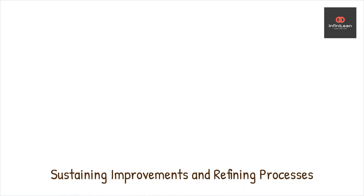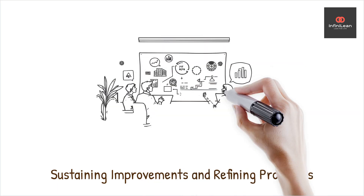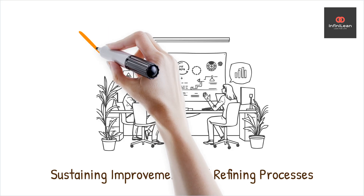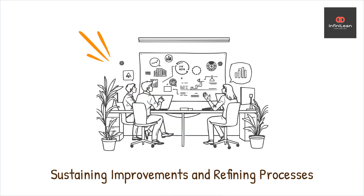Lastly, the Control Phase focuses on continuous improvement. Even with control measures, there's always room for further enhancement. The aim is to sustain the improvements and look for additional opportunities to refine and perfect the processes. Organizations remain agile, efficient, and competitive by embracing a continuous improvement culture. Other tools like statistical process control, SPC, and mistake-proofing, Poka-yoke, are used during the Control Phase.